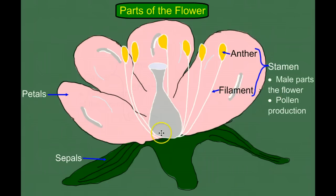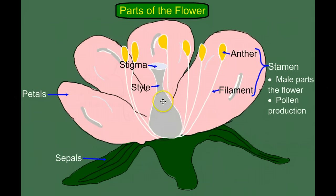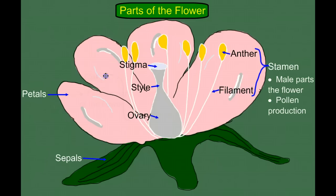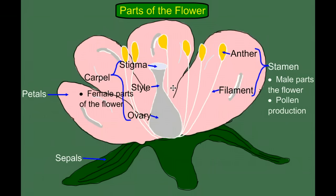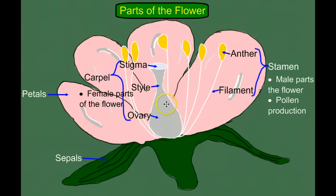In the middle we have this vase-like structure. At the top is called the stigma, the long thin neck is called the style, and the bottom swollen part is the ovary. Together these three parts make up the carpel, and this is the female part of the flower. What I've drawn here is what's generically called the perfect flower — it has both male and female parts. Some flowers might only have the female structures and other flowers only the male structures.